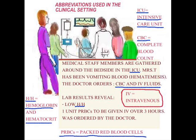The doctor ordered one unit of PRBCs, which means packed red blood cells, in order to address the problem of low hemoglobin. We can see here, even in one situation, the number of abbreviations that can be used — and this is only a shortened version. There are always abbreviations.